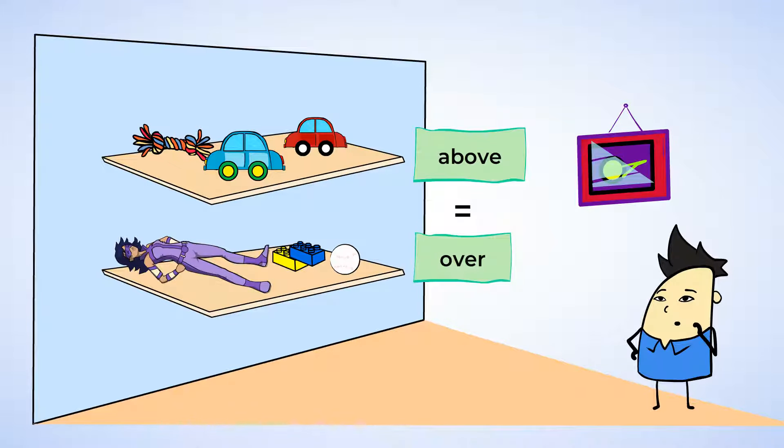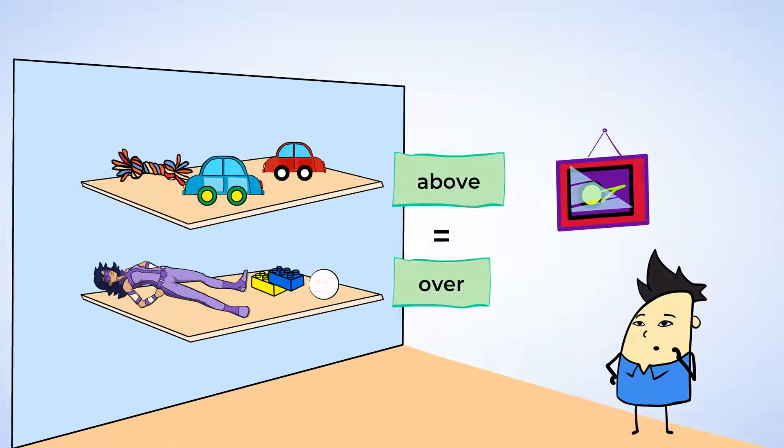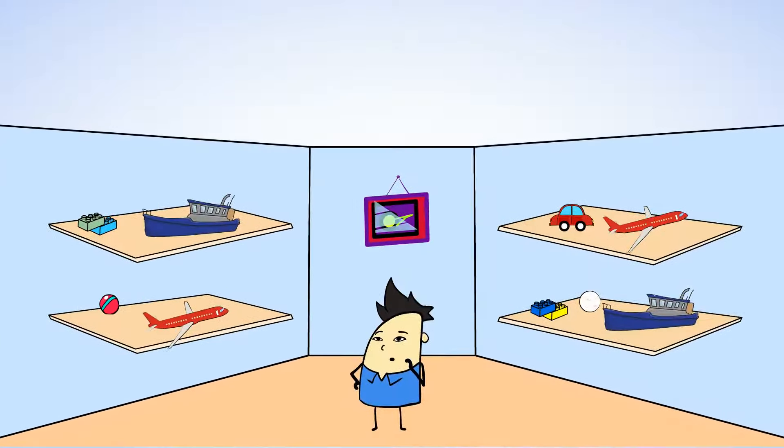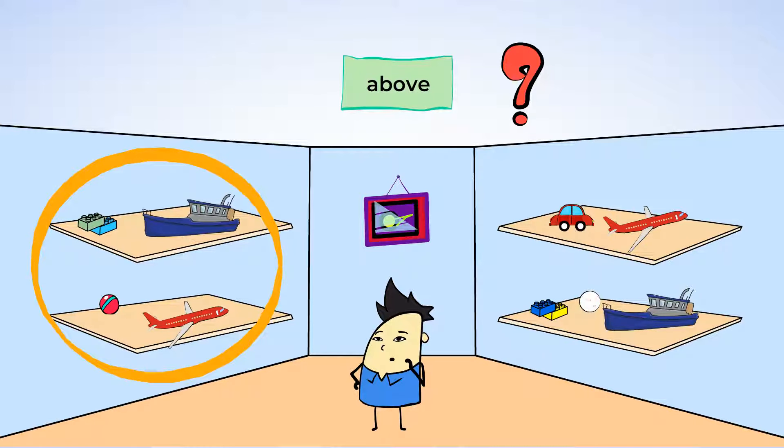What do you say we get more familiar with these words? Which picture here shows a toy boat above a toy plane? That's right, this one does. The toy boat is on the same shelf higher than the toy plane. And the boat is above the plane.